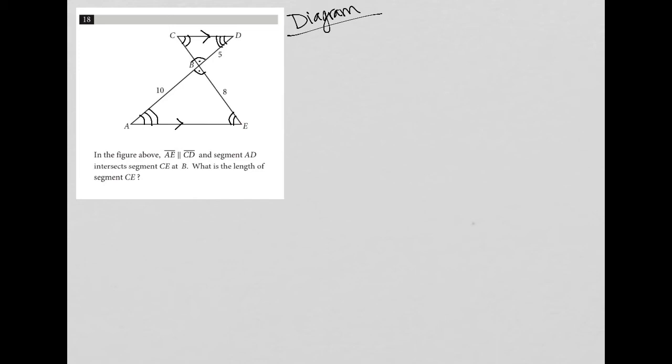So what I like to do sometimes is even redraw the triangles in the same orientation so our eyes can really see the connection between the two. So I'm going to say this is B for both, and then C and D, and then E and A.